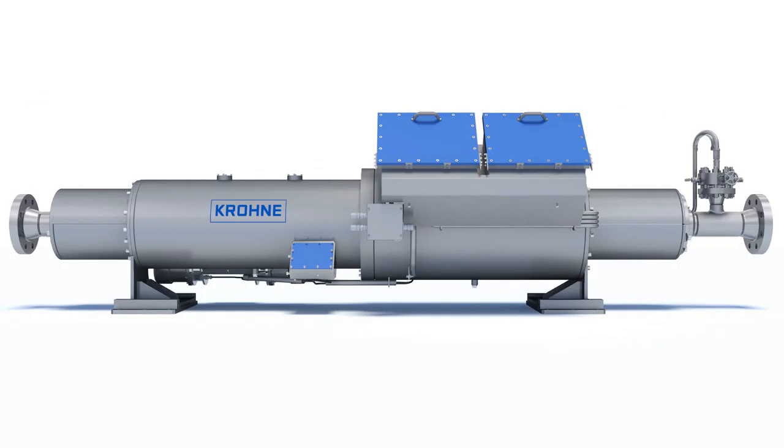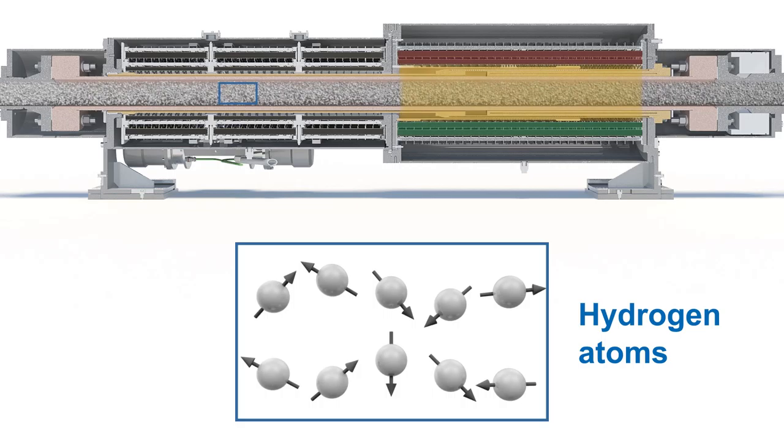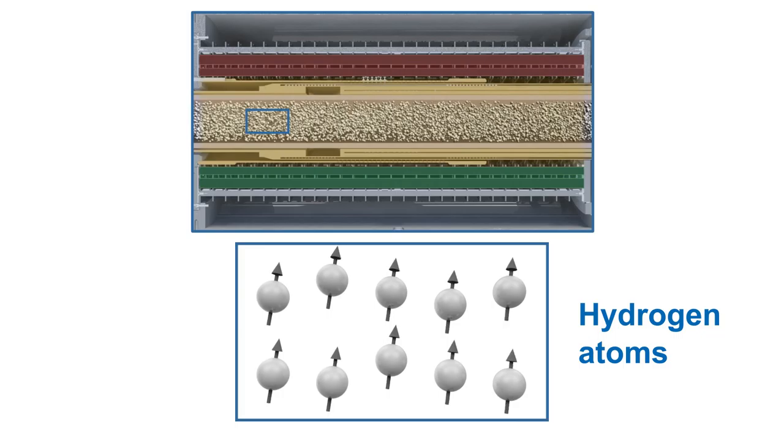Magnetic resonance makes use of the fact that oil, water and gas contain hydrogen atoms. These hydrogen atoms possess a small magnetic moment which makes it possible to count them. For this purpose the fluids are exposed to a magnetic field which causes the hydrogen atoms to align to the applied field.